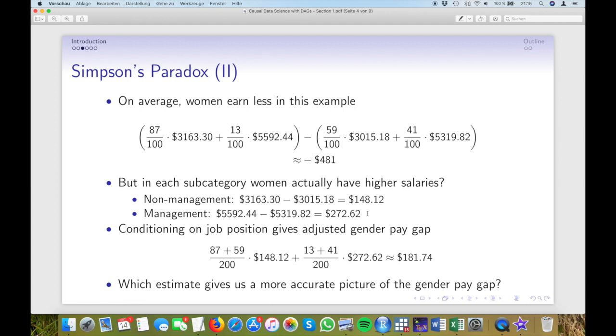If we take the average after adjusting for job positions, we get the so-called adjusted gender pay gap. 87 women and 59 men in a non-management position divided by 200, which is the total number of observations in our sample, times $148.12, which was the difference in that category. Then we take the 13 women and 41 men in a management position, divide by 200 and multiply by $272.62, the difference in the management category. If we do that, we find an adjusted gender pay gap of roughly $181.74. So this analysis would lead us to conclude that women earn on average more in company X.